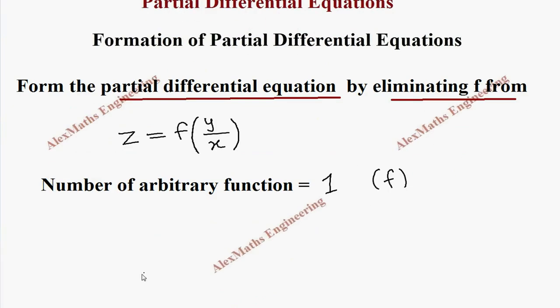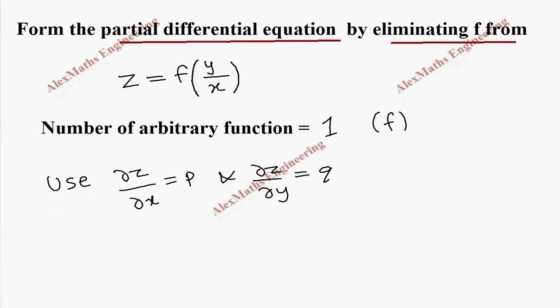So we are going to use only the first order partial derivatives: ∂z/∂x which is named as p, and ∂z/∂y which is named as q, to eliminate the arbitrary function.